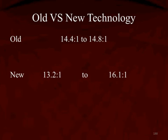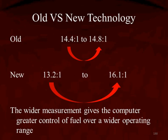So old versus new technology: the old narrow band oxygen sensor goes from 14.4 to 14.8, a very narrow band. The new one reads 13.2 to 16.1. The wider measurement is giving the computer much greater control over the fuel over a much wider operating range. That's why we have these new sensors.